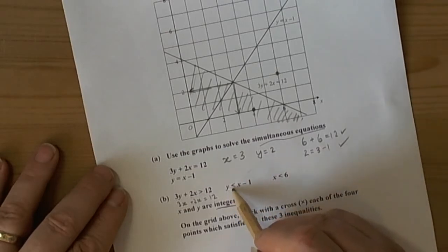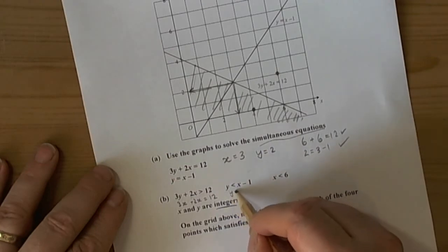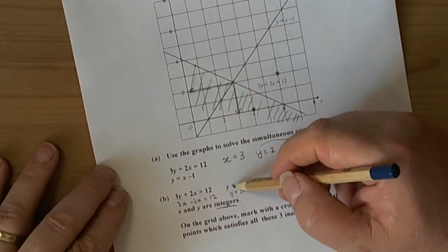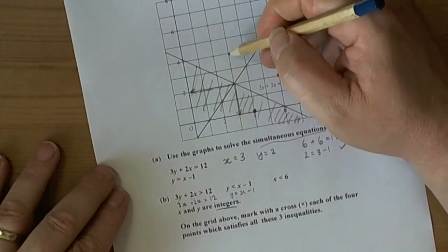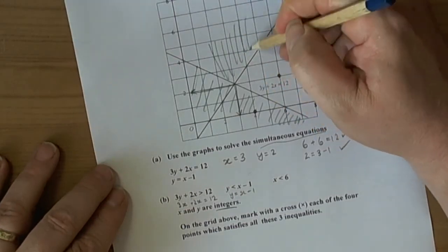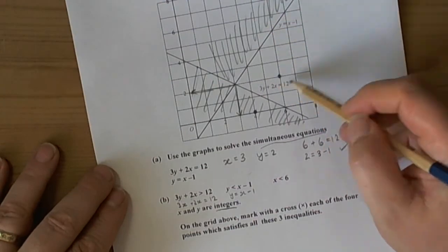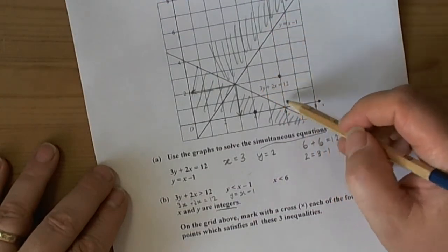The next inequality says y is less than x minus 1. The boundary line is y equals x minus 1, which they've already drawn. Since it has to be less than, we shade out above the line because the valid region is below. Our answers will be somewhere in this triangle.